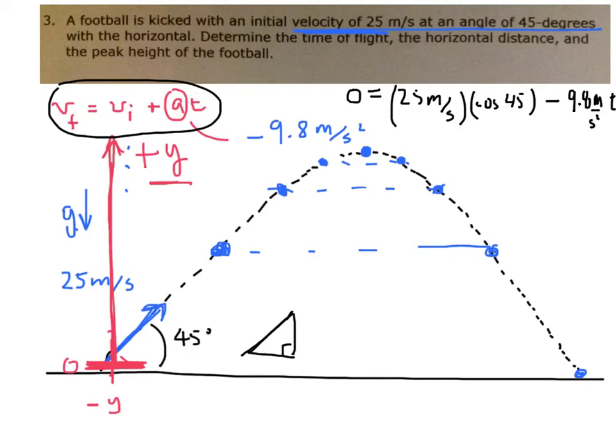I'm just going to remind you that in a 45-45-90 triangle, this is 1-1-square root of 2. You're given the hypotenuse, so the side here would be 25 meters per second, and we would divide that by the square root of 2 to get that value.